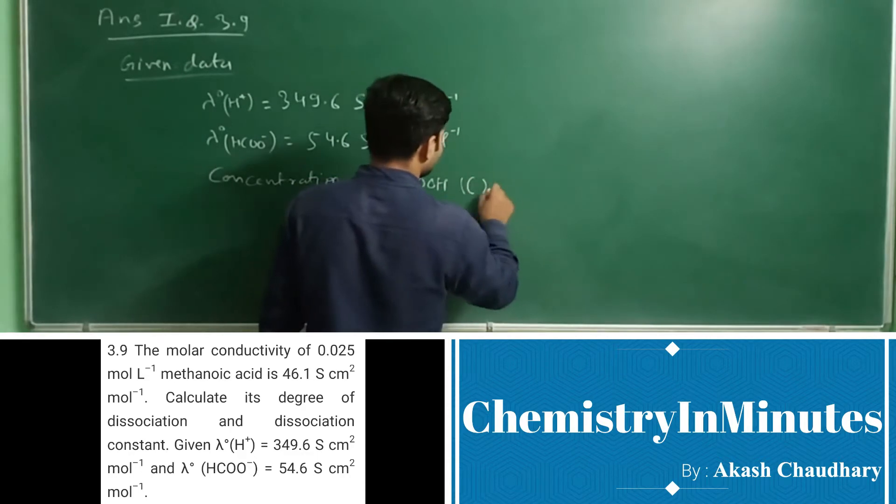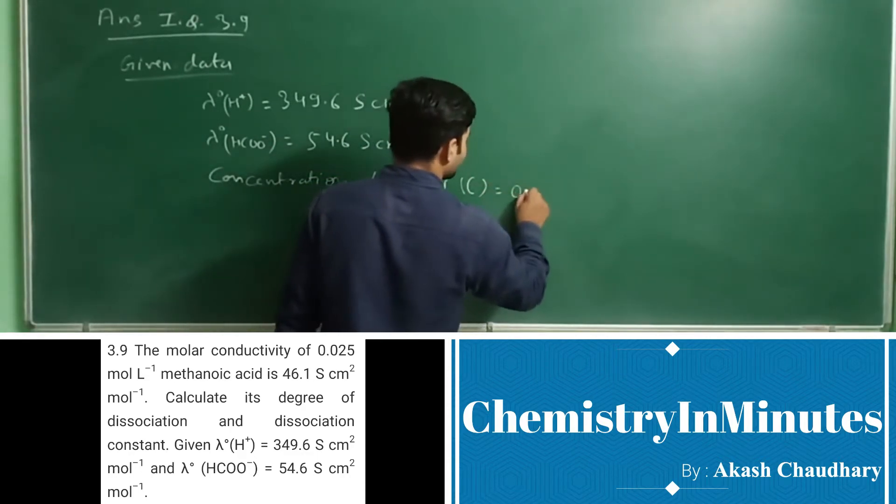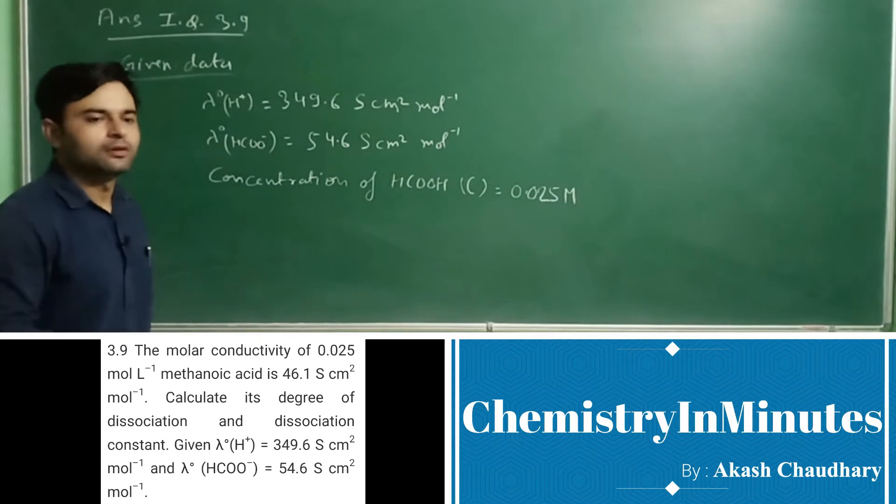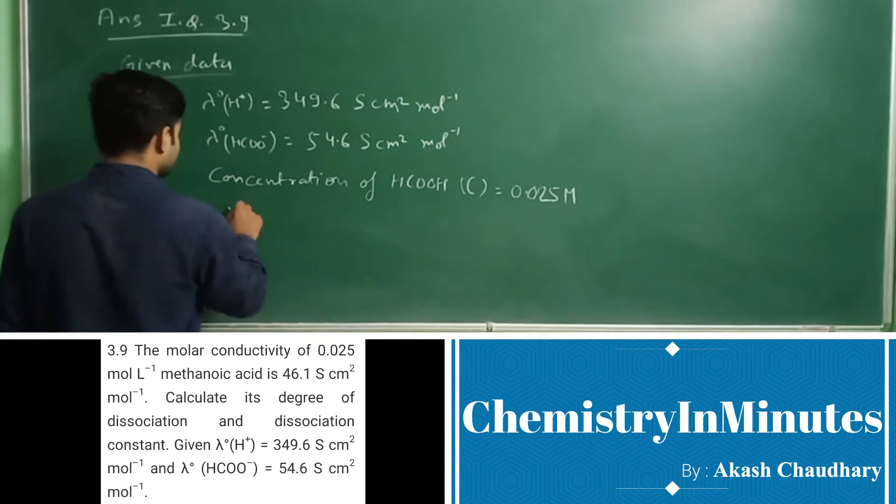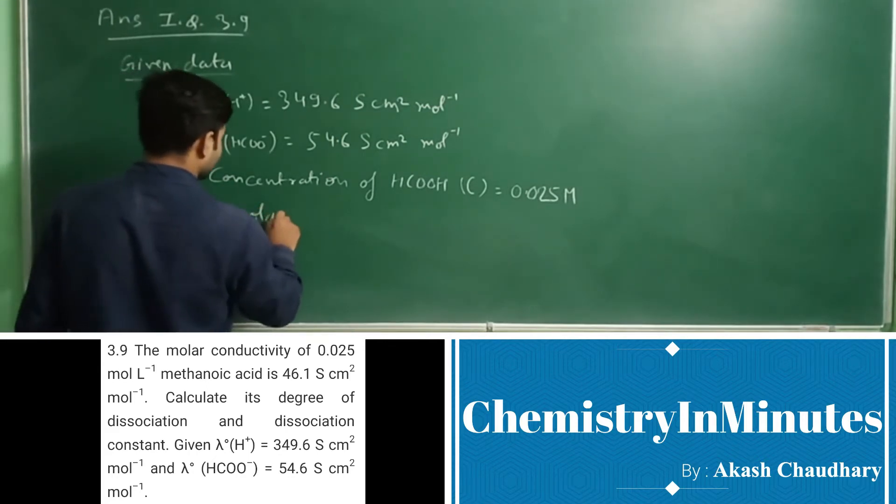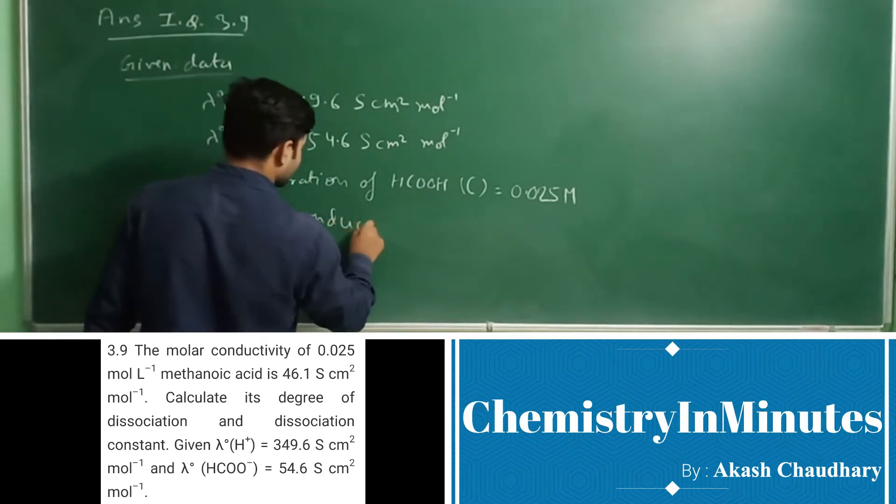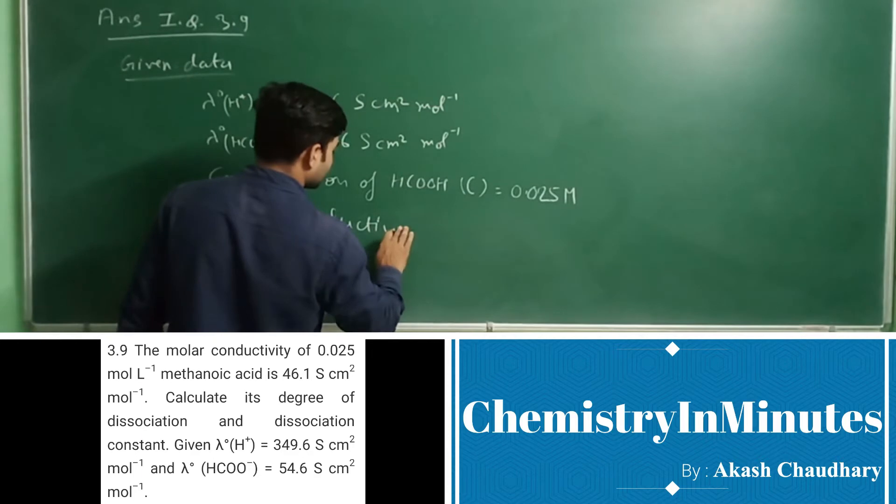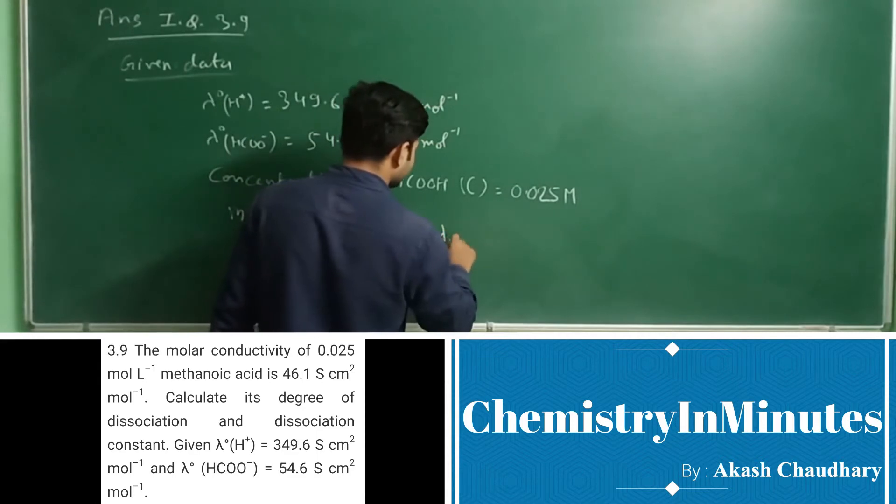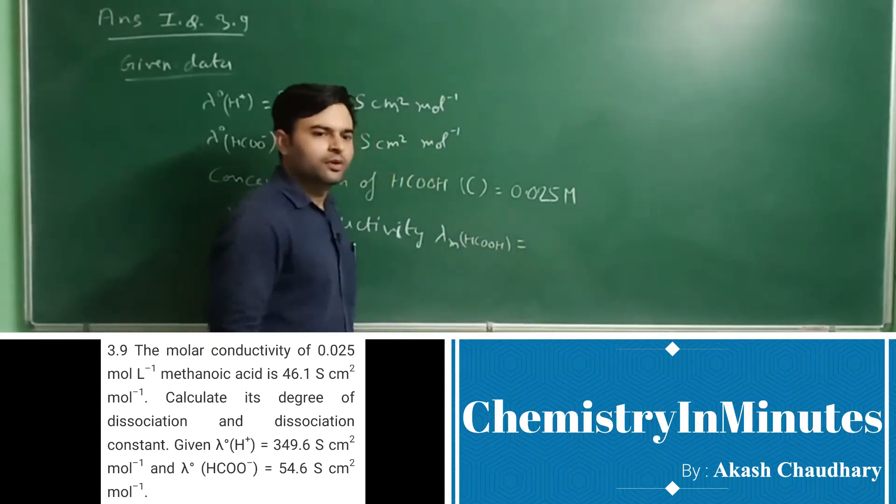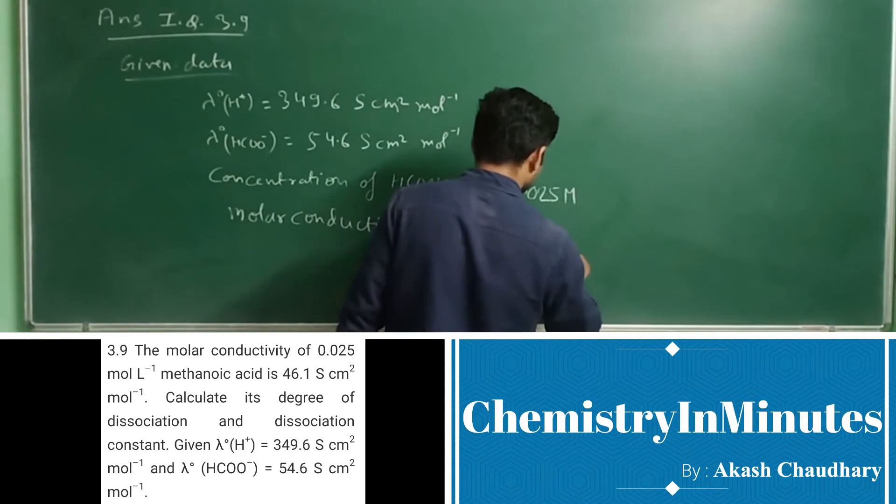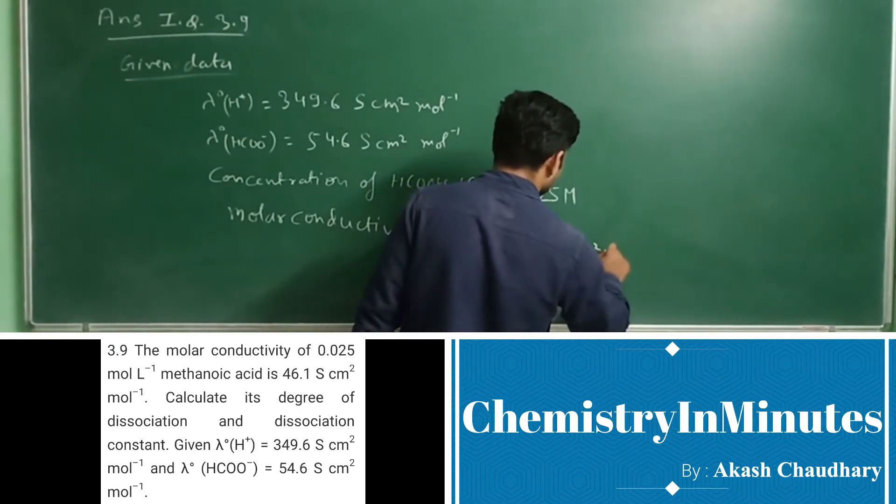Concentration of HCOOH methanoic acid, C equals 0.025 M, and molar conductivity lambda HCOOH equals 46.1 Siemens centimeter square per mole.